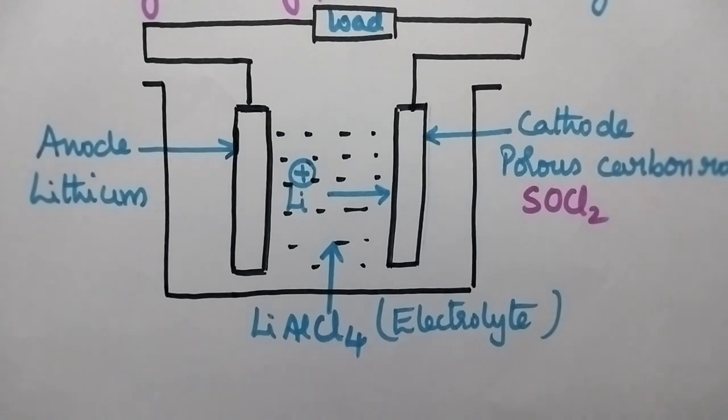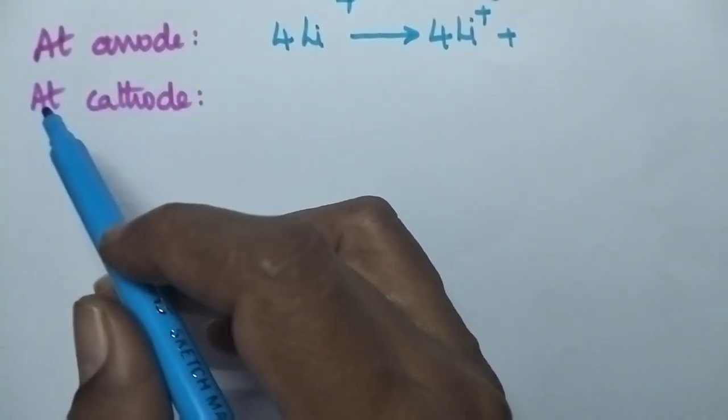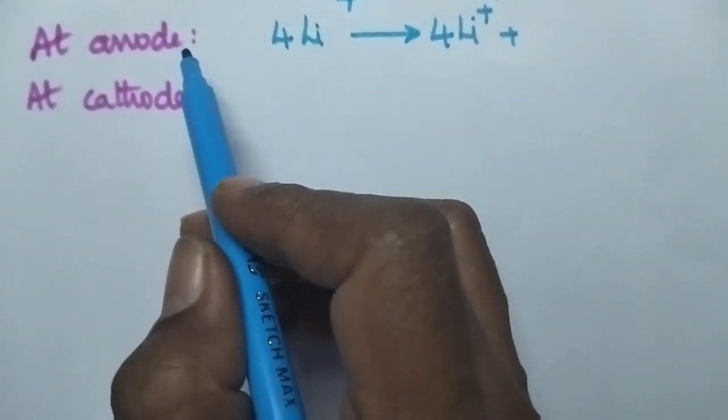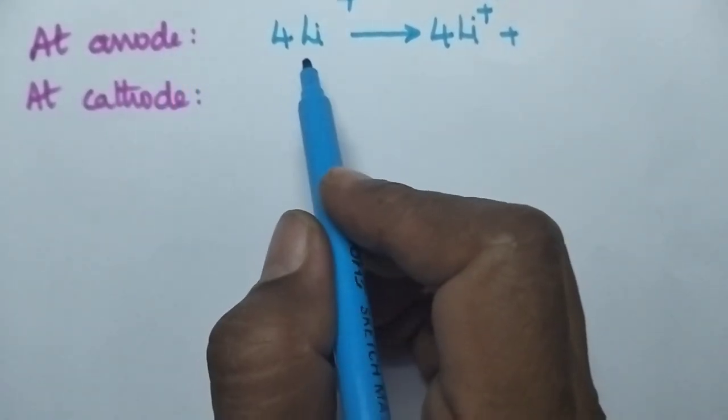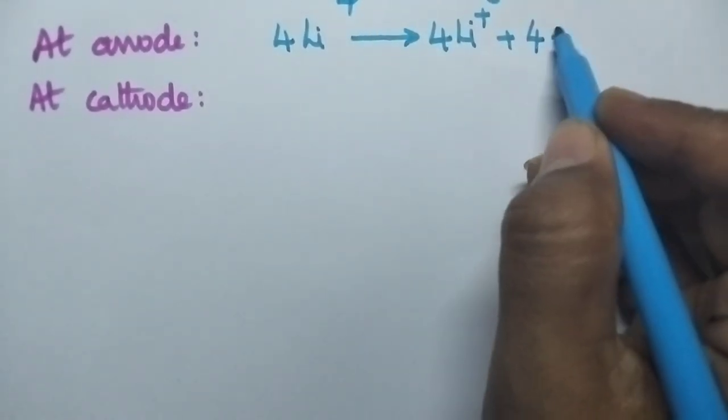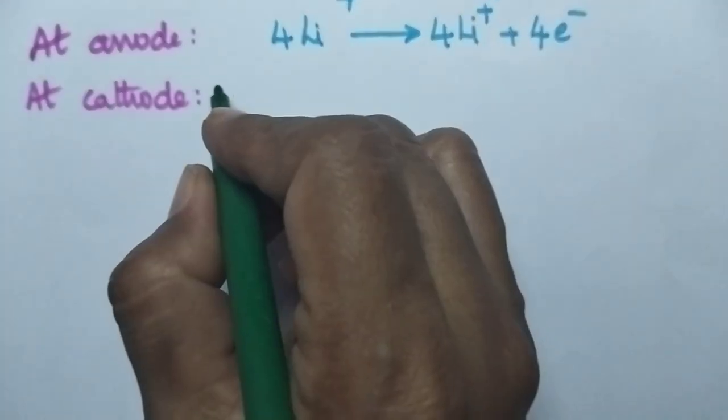At the anode, oxidation takes place whereas at the cathode, reduction takes place. At the anode, lithium atoms are oxidized to lithium ions with the loss of electrons.